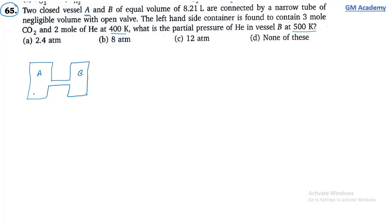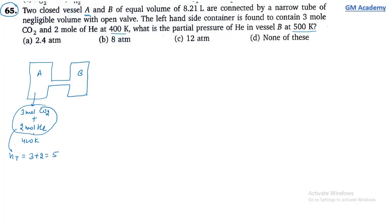The left container A contains 3 mol CO₂ and 2 mol helium at 400 Kelvin. Total moles in A = 5 mol. Total pressure = nRT/V = 5R × 400 / 8.21.